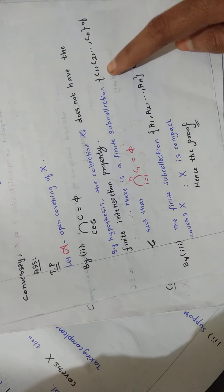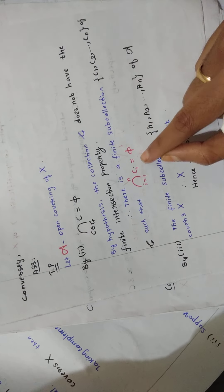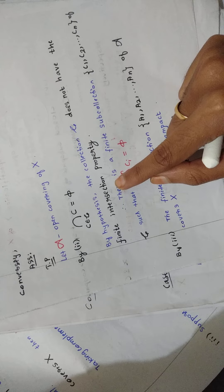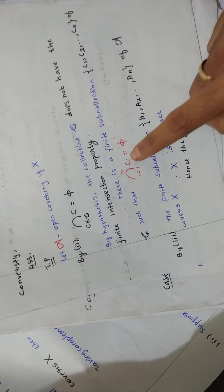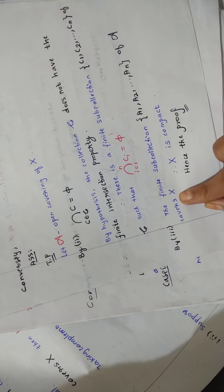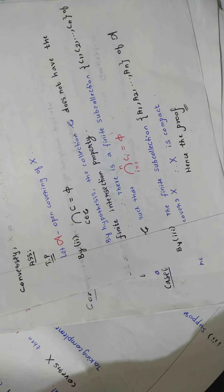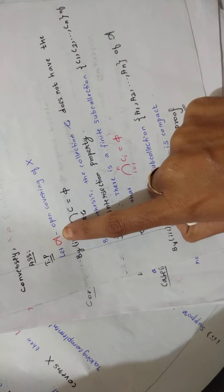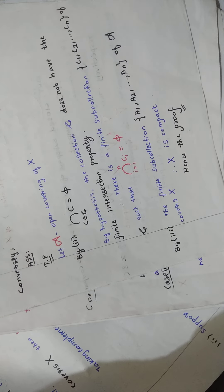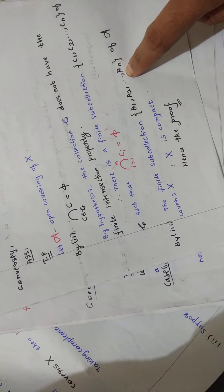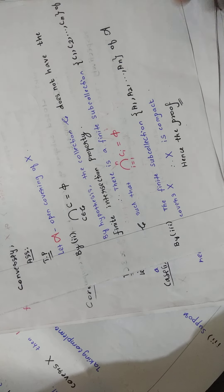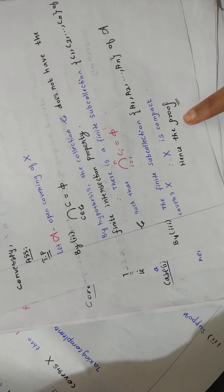Therefore, by the definition of finite intersection property, there is a finite sub-collection of script C such that the intersection equals empty. By condition 3, there is a finite sub-collection of script A that covers X. This satisfies the definition of compactness, so X is compact. Hence the proof is complete.